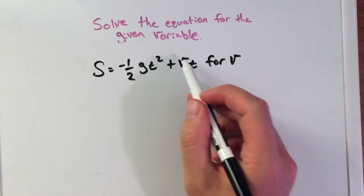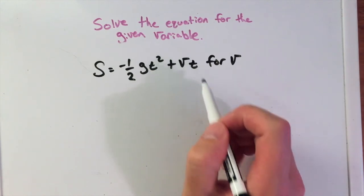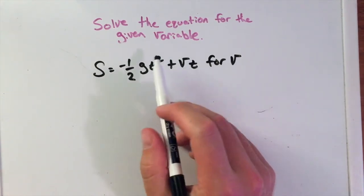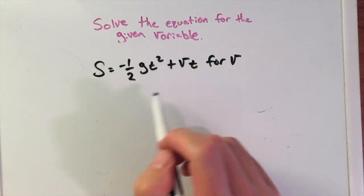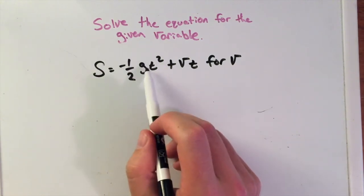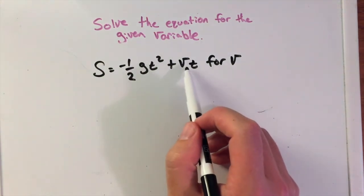We want to get v by itself. We see there's multiplication with v and t there. When I look at this, I see that we have two big sections: negative one-half g times t squared plus v times t.